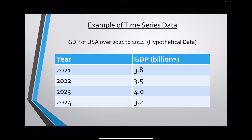The example of time series data can be the GDP of USA over 2021 to 2024. That's why we excluded other countries and only included USA. So data of USA from year 2021 to 2024 regarding GDP is an example of time series data.